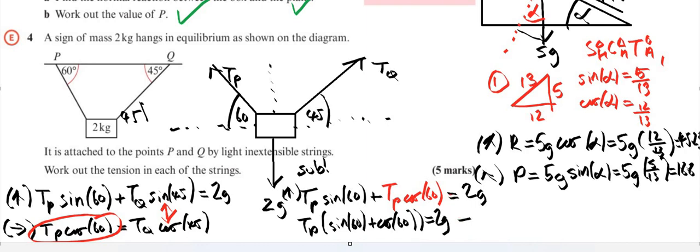If I want to find Tp, I'll just do Tp is equal to 2g divided by sine 60 plus cos 60. And if we print our calculators, making sure our calculators in degrees and not in radians, we will find that Tp is equal to 14.3 newtons.